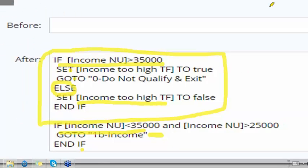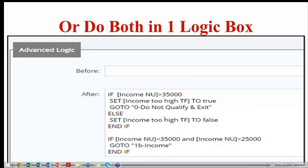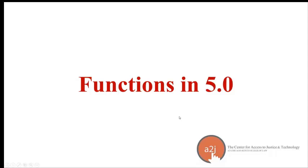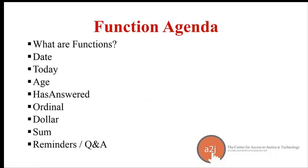Once you get those five commands down it's not actually as bad as it may look. If you're having problems with your logic, your logic box will turn red if the logic is broken and it'll throw up an error message like 'unexpected identifier,' 'missing variable,' or 'missing page.' We have these common logic errors explained on question number one on our a2jauthor.org page.